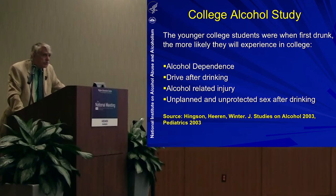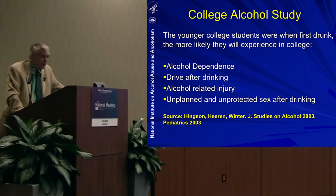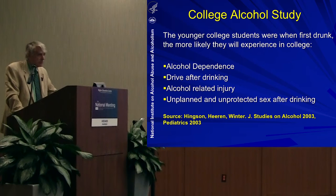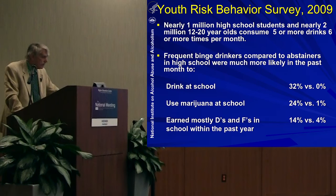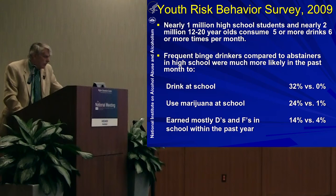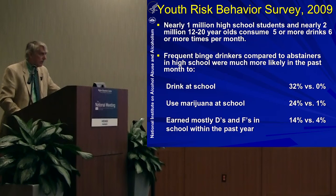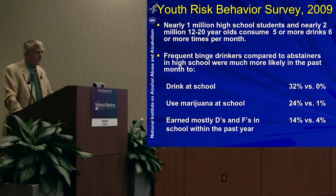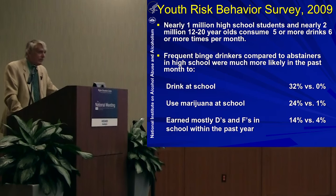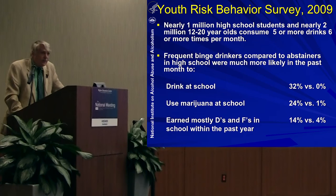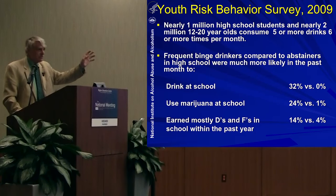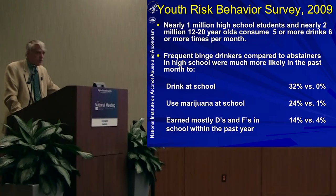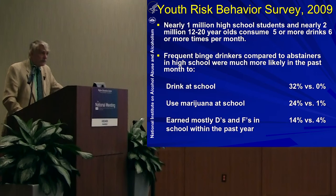The younger college students were when they first started to drink, the more likely they are to experience problems in college: alcohol dependence, driving after drinking, alcohol-related injuries, and risky sexual behavior. According to CDC, there are nearly a million high school students and nearly two million 12 to 20 year-olds who engage in binge drinking at least six times a month. Between a quarter and a third of them are more likely to drink and smoke marijuana at school, and they are over three times more likely to be getting mostly D's and F's. This is a national tragedy.